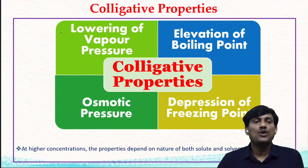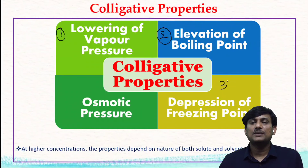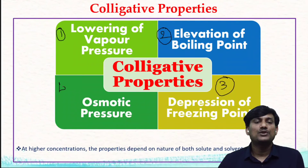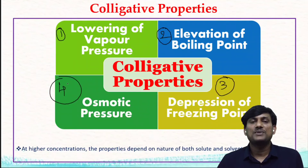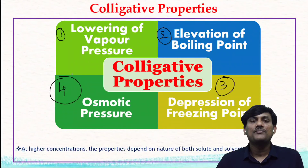The four colligative properties are: first, the lowering of vapor pressure; second, the elevation of boiling point; third, the decrease of freezing point; and fourth, osmotic pressure. These four properties depend only on the number of solute particles, not on the nature of the solute particles.